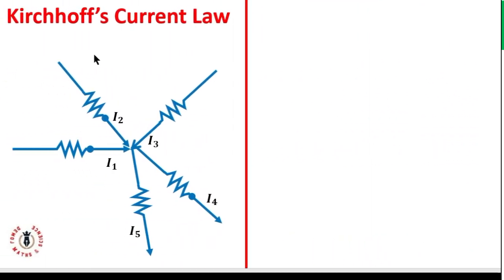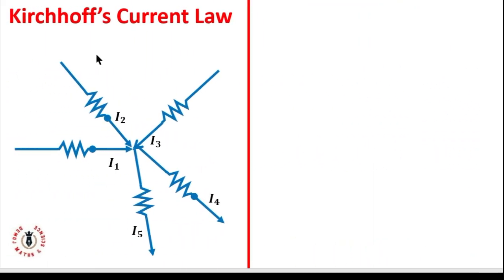What I want us to look at is Kirchhoff's Current Law. The Kirchhoff's Current Law states that at any junction in a circuit - here is a node, at any junction or node in a circuit - the current flowing towards the node equals the sum of the current flowing out of the node.